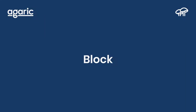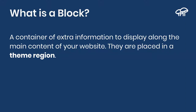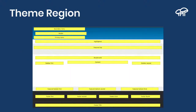Everything that is not in the middle is a block. A block is a container of extra information to display along the main content of your website, and blocks are placed in a theme region. When we install Drupal 8 out of the box, we get a blue theme called Bartik. Every theme will define theme regions — a theme region is a section on the page where you can place content, where you can place blocks. In this example, on the blue-black background there are three regions where I can place content. There is a white stripe called Highlighted, a gray stripe called Feature Top, and side regions on the left and right, plus some regions at the bottom. Everywhere there is a yellow box, you can place blocks.